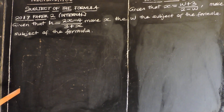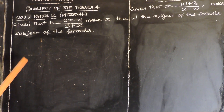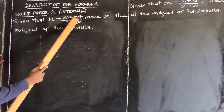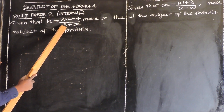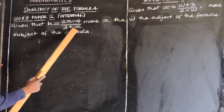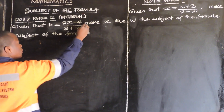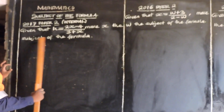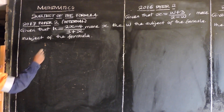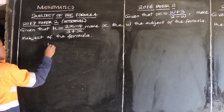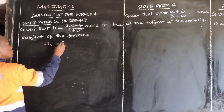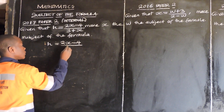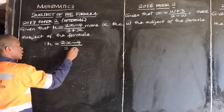We have the 2017 paper 2. It's saying given that h is equal to 2x minus 4 over 3 plus x. Then we are told to make x the subject of the formula. So our expression is given by h is equal to 2x minus 4 over 3 plus x.